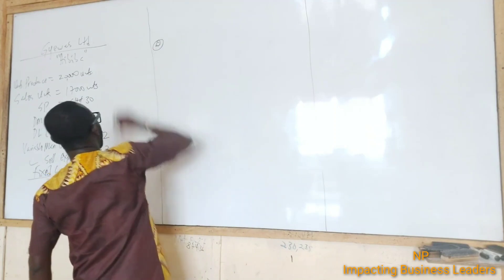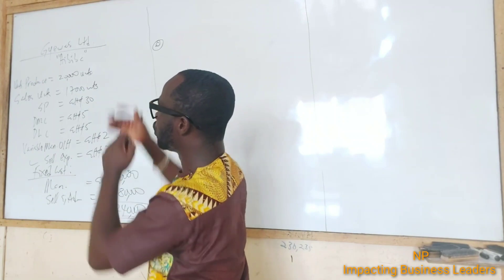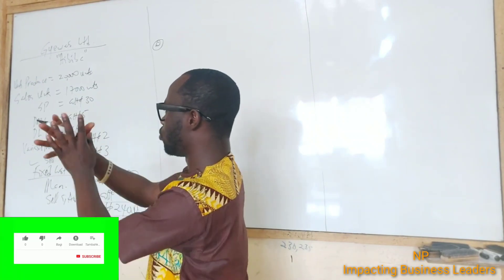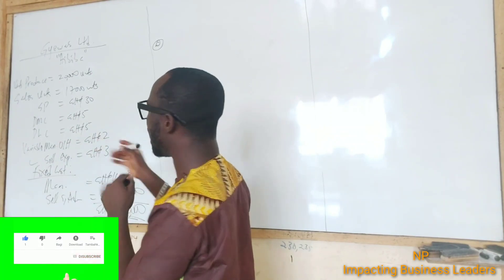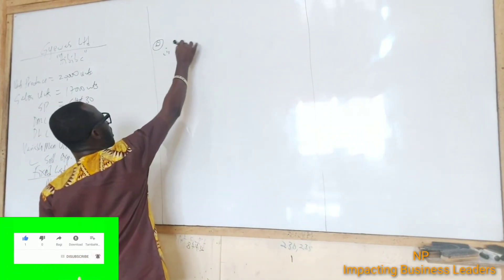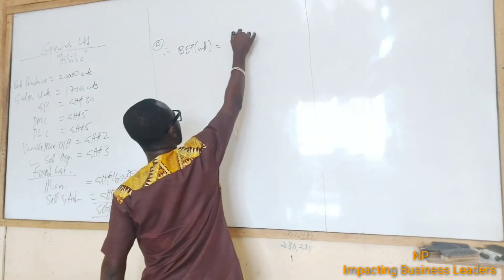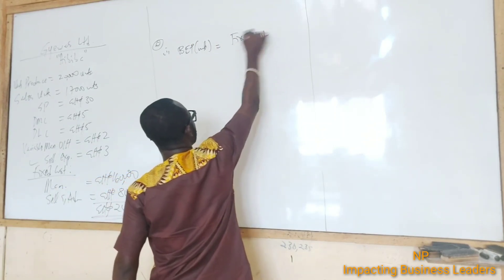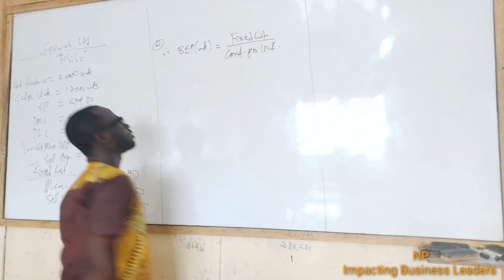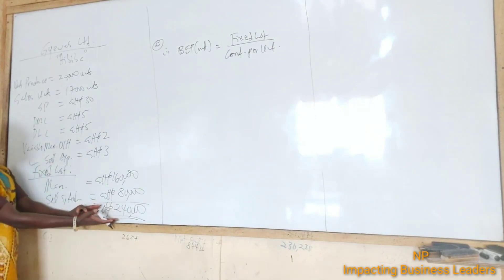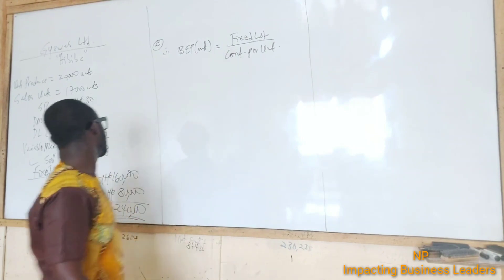Part A asks: how many units of Habiba should G1 Limited produce in order to break even, and what is the sales revenue at that point? The break-even point in units equals fixed cost divided by contribution per unit. We have fixed cost of $240,000, so we need to calculate contribution per unit.